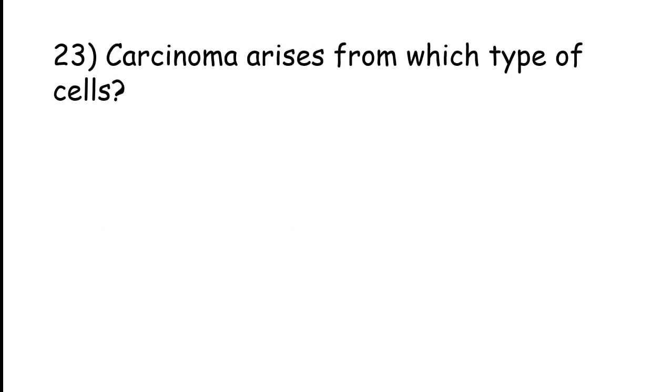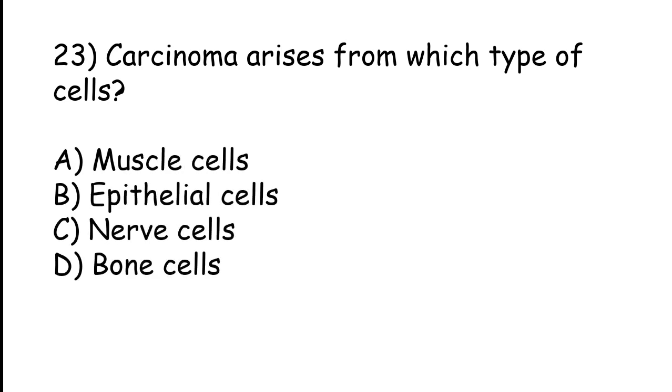Carcinoma arises from which type of cells? Muscle cells, epithelial cells, nerve cells, bone cells. The correct answer is option B, Epithelial cells.